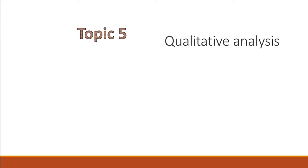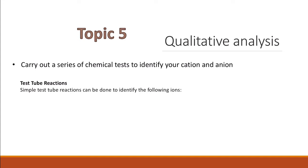Topic 5 is qualitative analysis. They could ask you to carry out a series of chemical tests to identify your cation and anion. They're either going to give you the test and the results and ask you to identify the cation and anion, or give you the cation and anion and ask you to use chemical tests to identify these. Make sure that you know your test tube reactions, the simple reactions that can be done to identify the following ions.